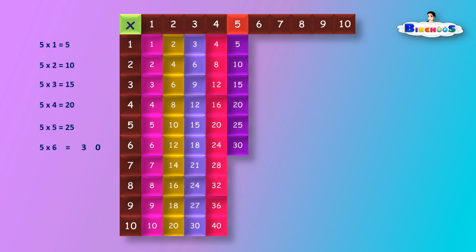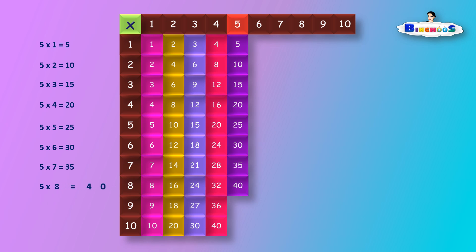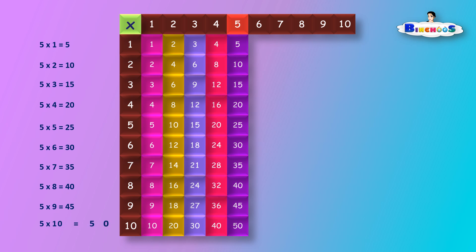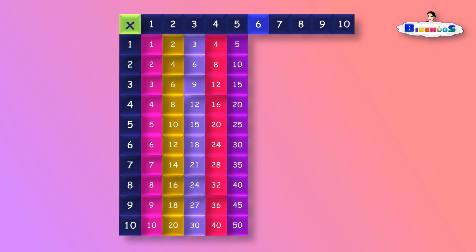5 times 6 is equal to 30. 5 times 7 is equal to 35. 5 times 8 is equal to 40. 5 times 9 is equal to 45. 5 times 10 is equal to 50. Multiplication of 6.